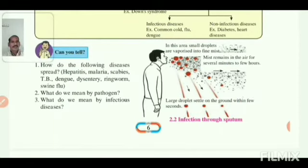Second question: What do we mean by pathogen? A pathogen is a microorganism that causes infection of some particular disease. Any organism that causes disease is called a pathogen.